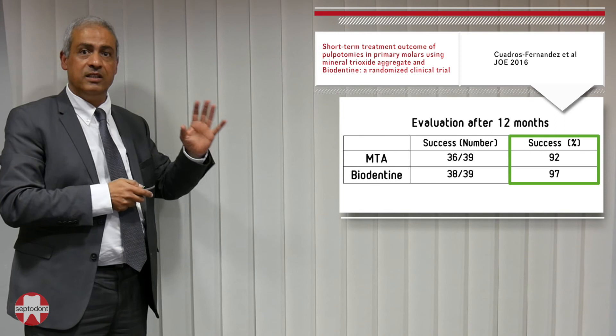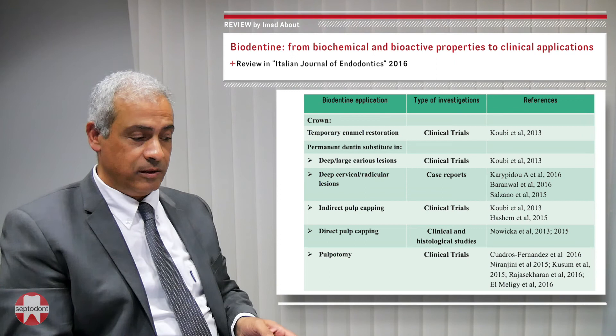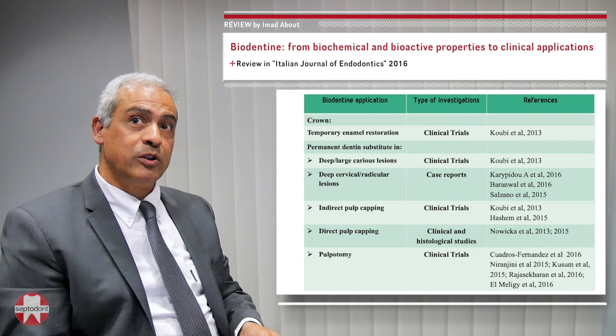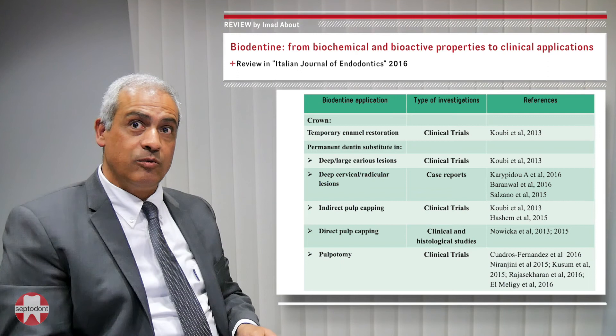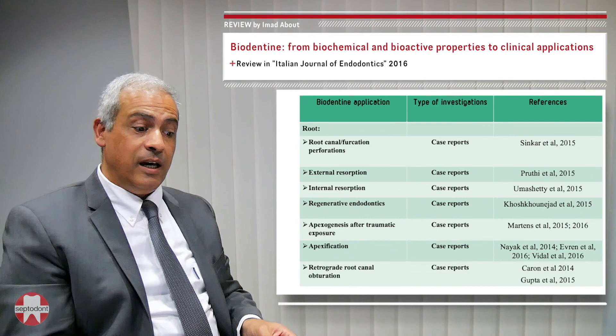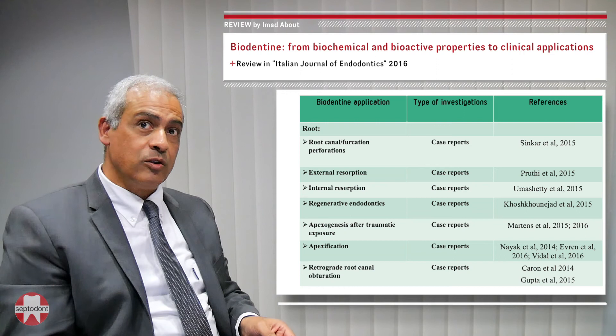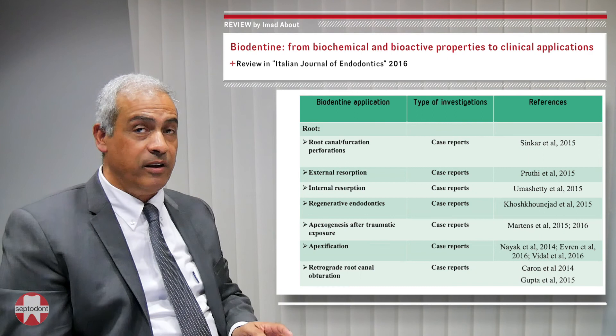The success rate of Biodentine in pulpotomy is even higher than for other materials, though the difference is not statistically significant. In addition to pulpotomy studies, since Biodentine's release in late 2010, several clinical trials and clinical cases have been published. A complete list of applications in the crown and root is provided in these tables, and the full story is written in a review to be published in the Italian Journal of Endodontics in 2016.